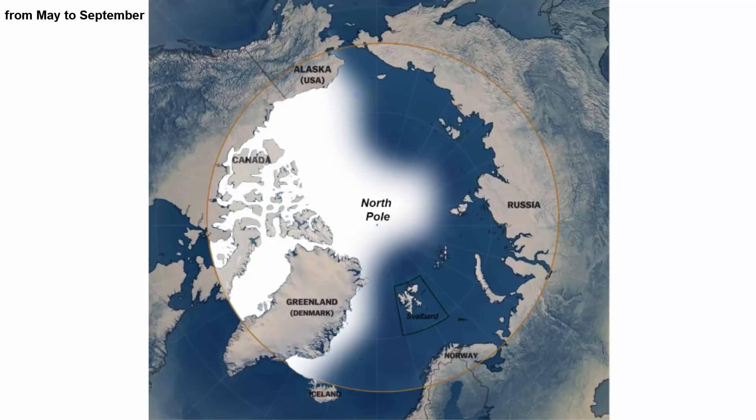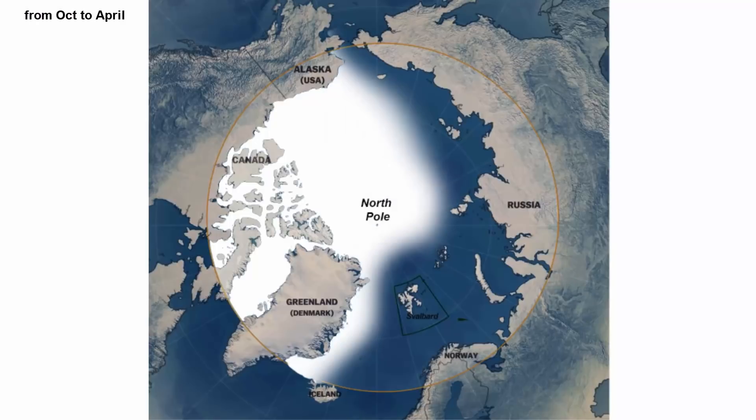Sea ice extent is largely affected by winds and ocean currents as well as temperature. The northern hemisphere experiences summer during the months of June, July, and August, because it is tilted towards the sun and receives the most direct sunlight. Warm water of the tropical region moves northward into the Arctic Ocean and gets all mixed up. The tropical warm water does not reach all the way to the North Pole, but the surrounding sea ice starts to melt during the summer season.